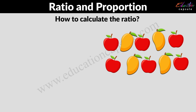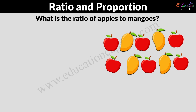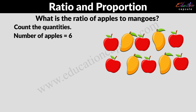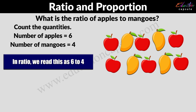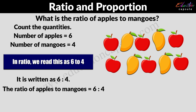As you can see this, tell me: what is the ratio of apples to mangoes? Count the quantities first. The number of apples is equal to 6, and the number of mangoes is equal to 4. So in ratio, we read this as 6 to 4. It is written as 6 ratio 4. The ratio of apples to mangoes is 6 ratio 4.